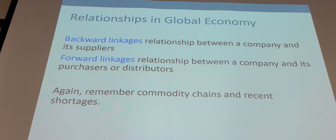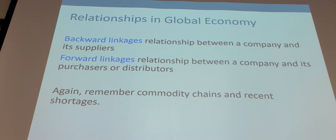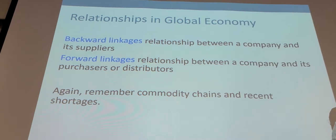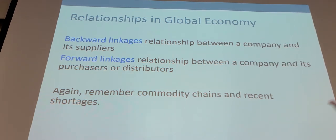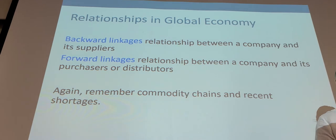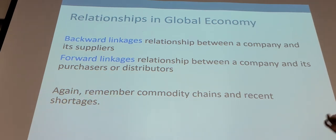Backward linkages are the relationships between a company and its suppliers — you need your materials to make your product, and if they stop coming in, you can't make anything. Forward linkages are the relationships between a company and its purchasers or distributors. Everything is a flow — if things aren't flowing in and flowing out, you're not making money.